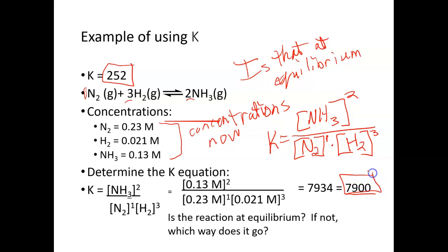If this K is too high—so this 7,900 is more than 252, so it's too high—what that means is that we have too much product. So what that tells us, if we have too much product, our reaction is going to go backwards to get rid of that product. So that's one way that we use our K value.